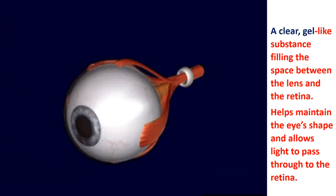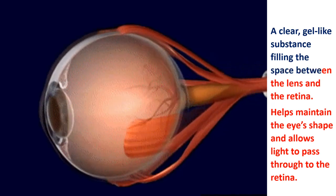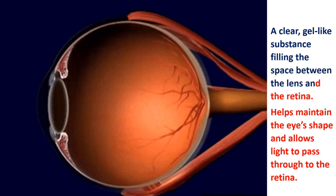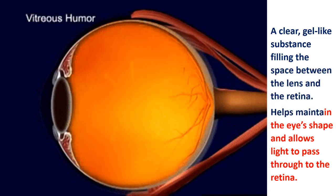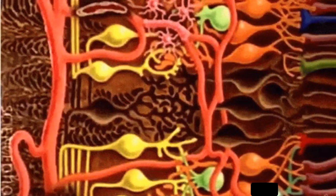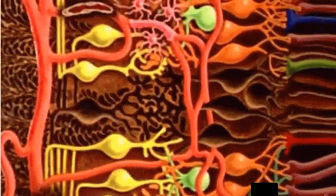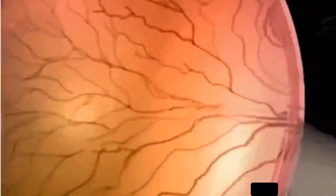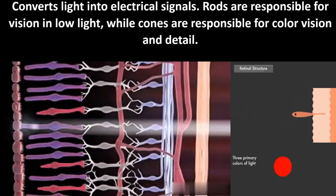Vitreous humor: A clear, gel-like substance filling the space between the lens and the retina. It helps maintain the eye's shape and allows light to pass through to the retina. Retina: A thin layer of tissue lining the back of the eye, containing photoreceptor cells — rods and cones — which convert light into electrical signals.